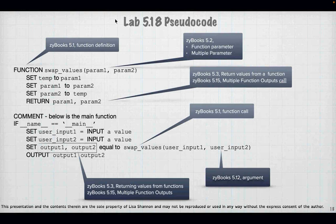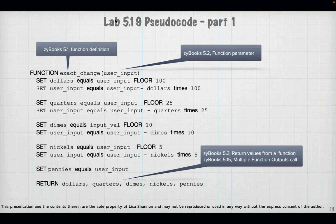Lab 5.18 is our swap. If you were here you now know what a swap is. We're going to pass in two values, swap those values, return them, and then output the new swapped values. This is a multi-return — it has param1 and param2 and it's basically what we just did.